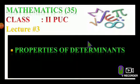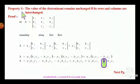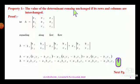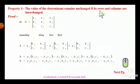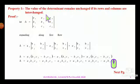Now today let me begin with the first property of determinants. The first property goes like this: the value of the determinant remains unchanged — that is, unaltered — if its rows and columns are interchanged. In the first property it is clearly stated that if all the rows and columns of a determinant are interchanged, the value of the given determinant remains the same.